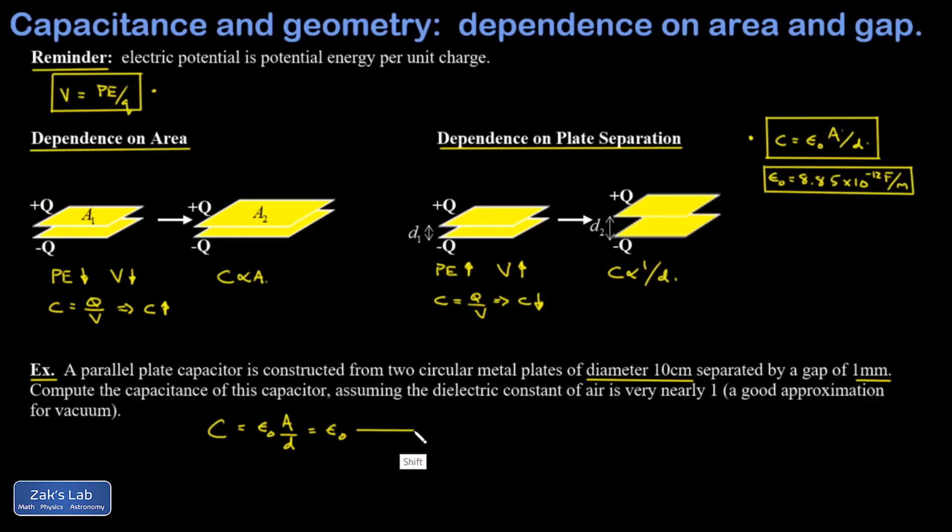I'll write one more step symbolically because I want to point out that the area of a circle, if I replace r with diameter over 2, I get one fourth pi diameter squared. Now I plug in all my numbers, convert those centimeters to meters, convert the millimeters to meters, and when I crunch the numbers here I get 6.95 times 10 to the negative 11 farads.